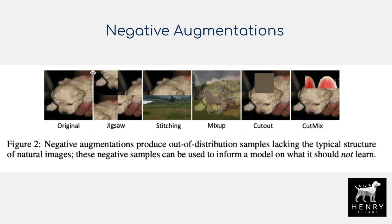In addition to jigsaw, the authors also focus on stitching, which is similar to CutMix — randomly selecting half of one image and pasting it with half of another, creating examples that are out of distribution because two completely different scenes would never coexist. Mixup averages out the pixels, which is also out of distribution for natural images. Cutout introduces random cropped-out patches, and CutMix replaces those patches with another image. Jigsaw and the idea of corrupting global structure remain the key, best example of a negative out-of-distribution augmentation in this study.